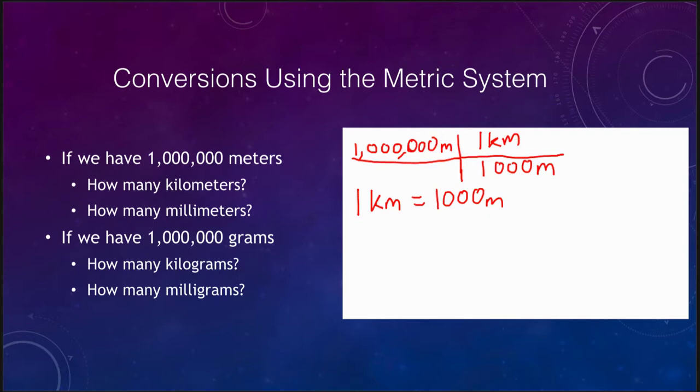If we look there, that means that when we look at the cancellation, our units cancel, meters will cancel, and we will take 1 million divided by 1000.